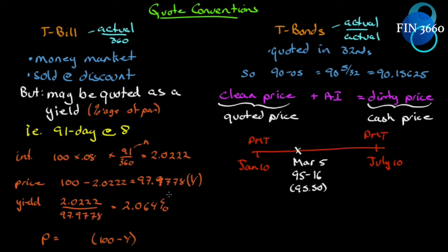In that formula, (100 − Price) gives us the interest we'll receive, and (360/n) tells us how many times we can earn that interest in a 360-day period. So if we know the price is $97.9778 and it's a 91-day T-bill, we use this formula to figure out the quoted yield. We take the discount earned and multiply by the number of such periods in 360 days.